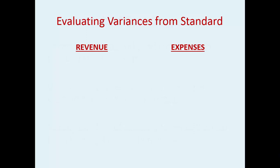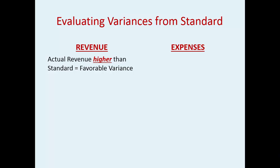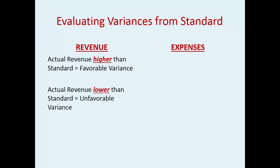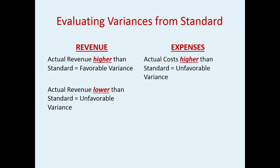Evaluating those variances from standard: if the actual revenue is higher than the standard, that means you made more than you thought you would — that's favorable. If actual revenue is lower than standard, that would be unfavorable. For expenses it's just the opposite. If actual costs are higher than the standard, that would be unfavorable — you spent more than you expected. If the costs are lower, that is favorable.